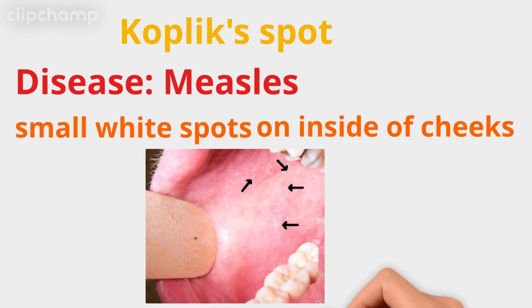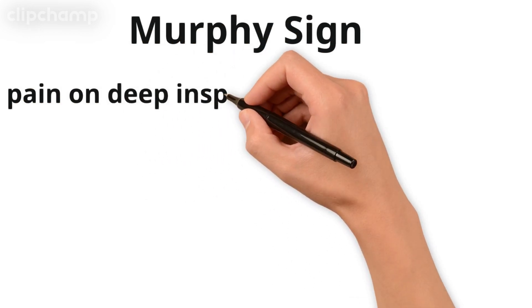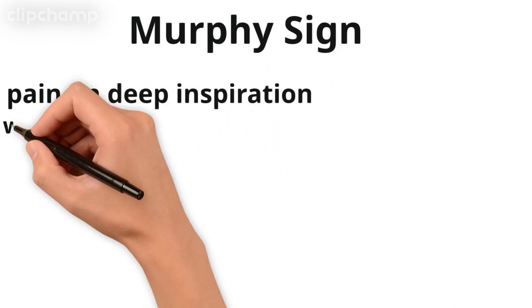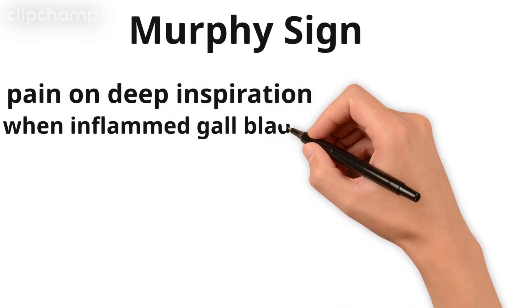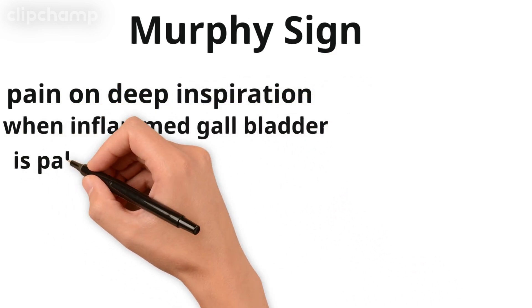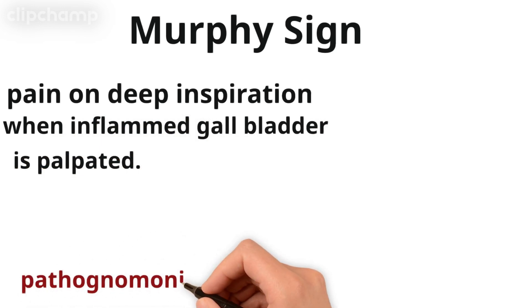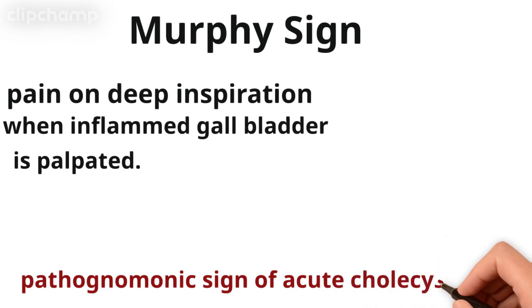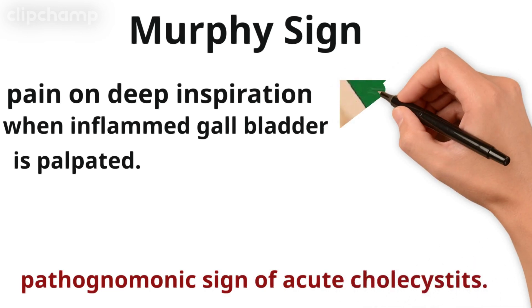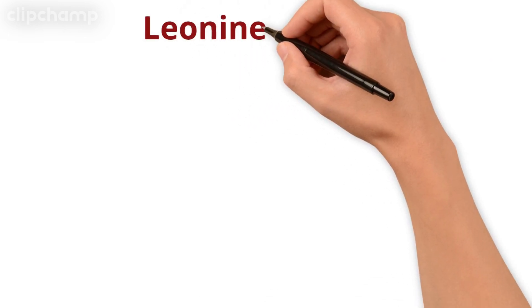Next is Murphy's sign. Murphy's sign is most commonly known — it is actually pain on deep inspiration when the inflamed gallbladder is palpated. When we touch the inflamed gallbladder it elicits tenderness. It is the pathognomonic sign of acute cholecystitis. Here you can see Murphy's sign.